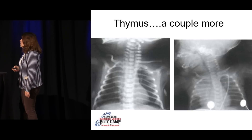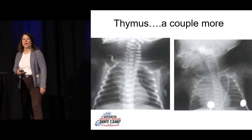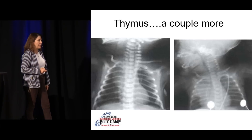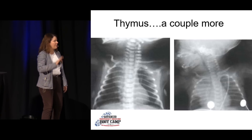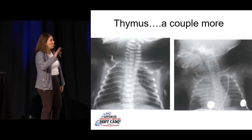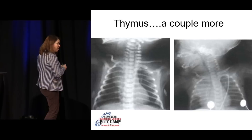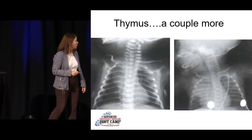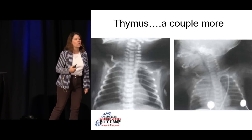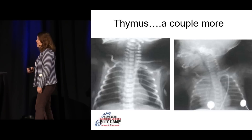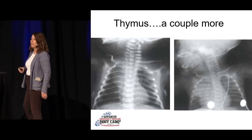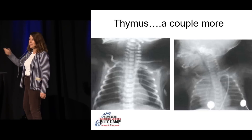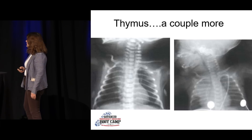A couple of other views of the thymus. If you're making the diagnosis of right upper lobe pneumonia in a very young baby — a three-month-old — reconsider that maybe you're looking at the thymus, especially if it's kind of homogeneous. I've seen them look almost like a total whiteout on the right depending on how the film is taken. So if you're thinking this is a right upper lobe pneumonia, maybe have your radiologist read the film, because you might be dealing with thymus tissue — totally normal.